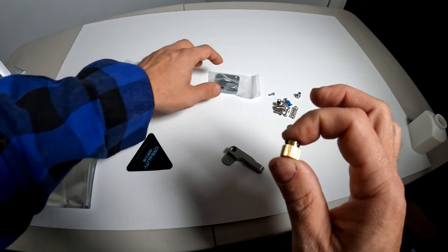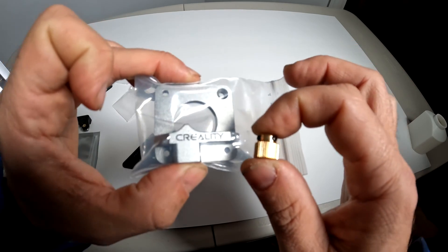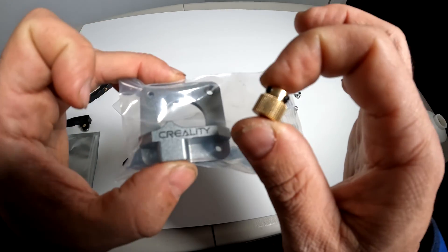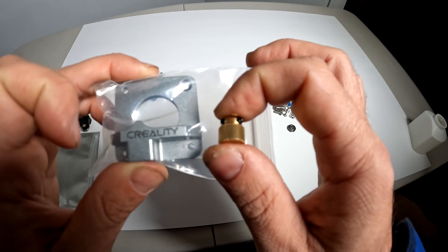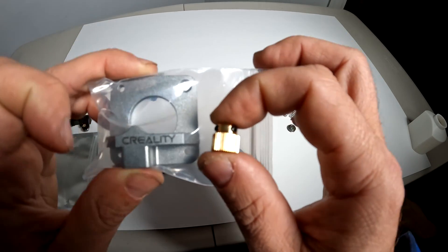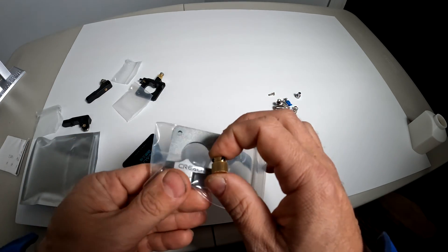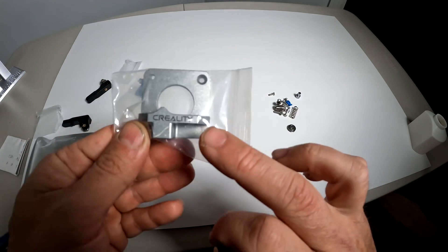So get online, get the all metal extruder from Creality, change the extruder, change the gear, and eliminate this as a cause for under-extrusion in your Creality 3D printers. I'll provide a link in the description below to this exact extruder.